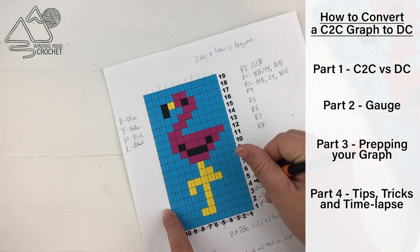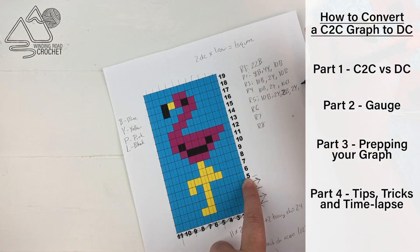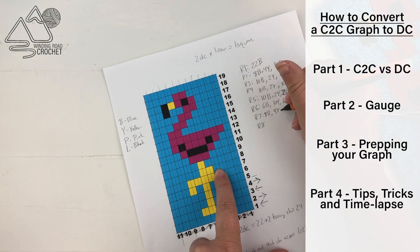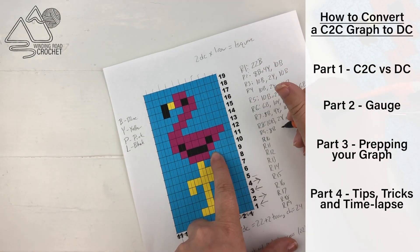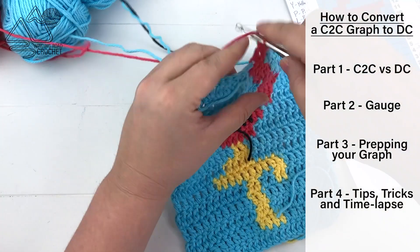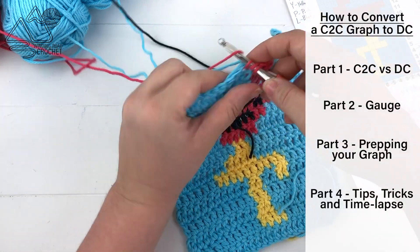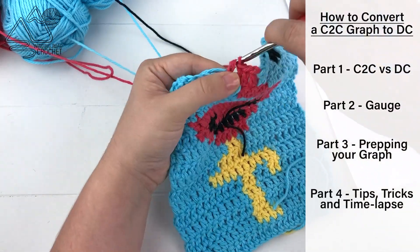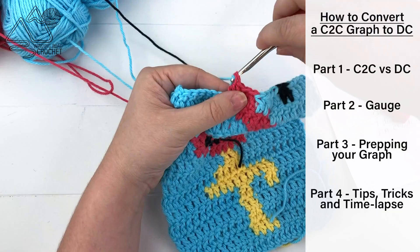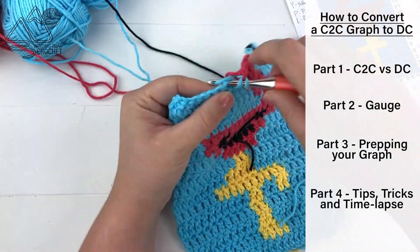In this video, I'm showing you how to prep your graph so you can work from a corner-to-corner graph for double crochet and make your project go smoothly. And then the very last video I'm doing a time-lapse of this flamingo project and giving you lots of different tips and tricks to make your project go easier.